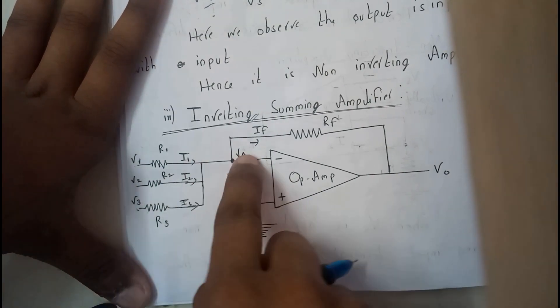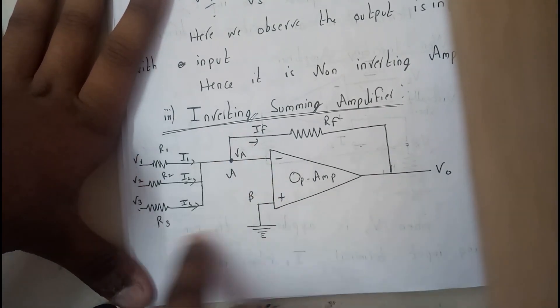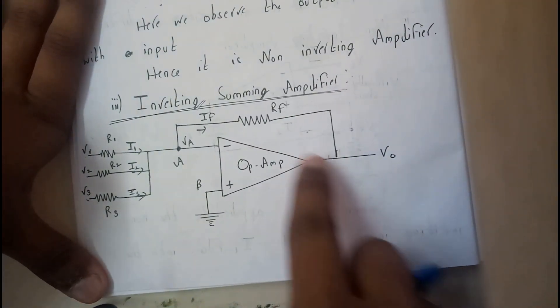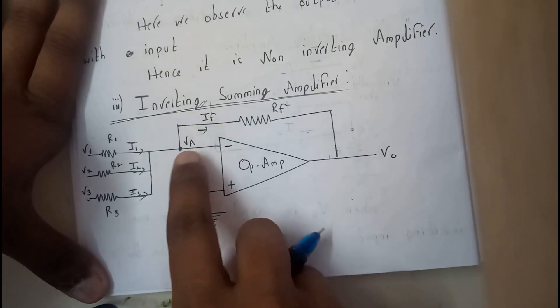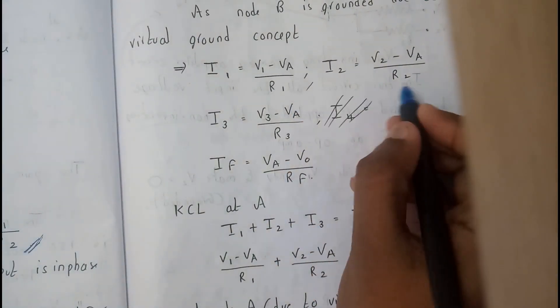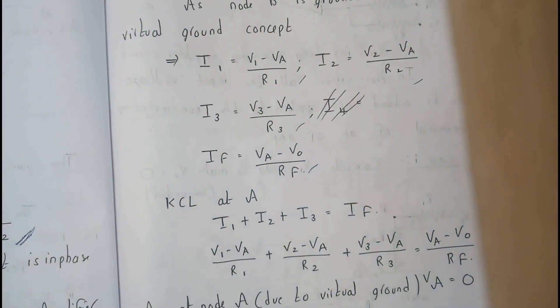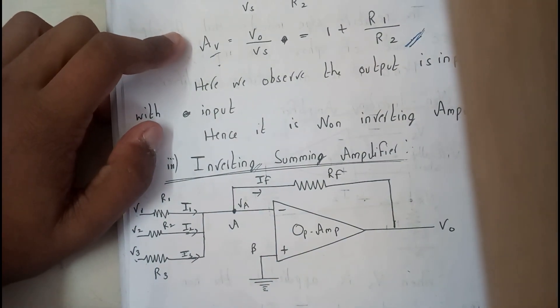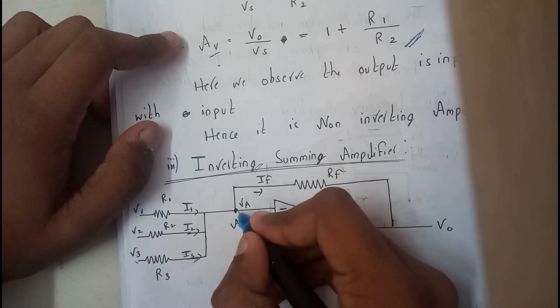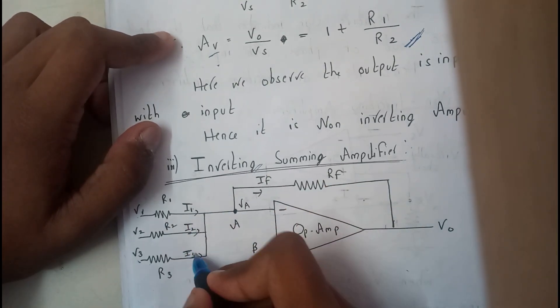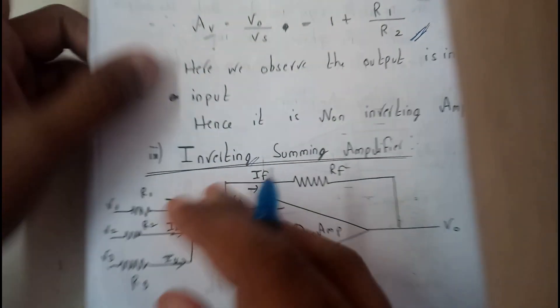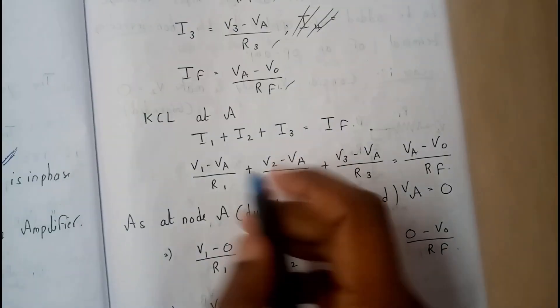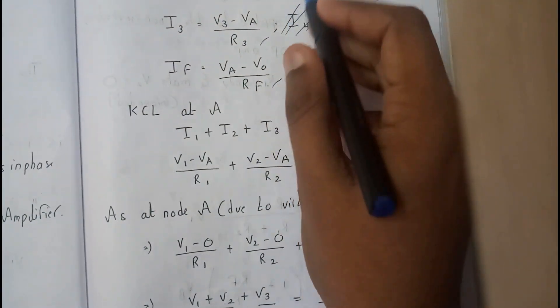i3 is nothing but V3 minus Va by R3. And if is nothing but Va minus V0 by Rf. So we totally have four equations. Now applying KCL at the inverting node, we get i1 plus i2 plus i3 equals if. I've substituted all four formulas as written here.